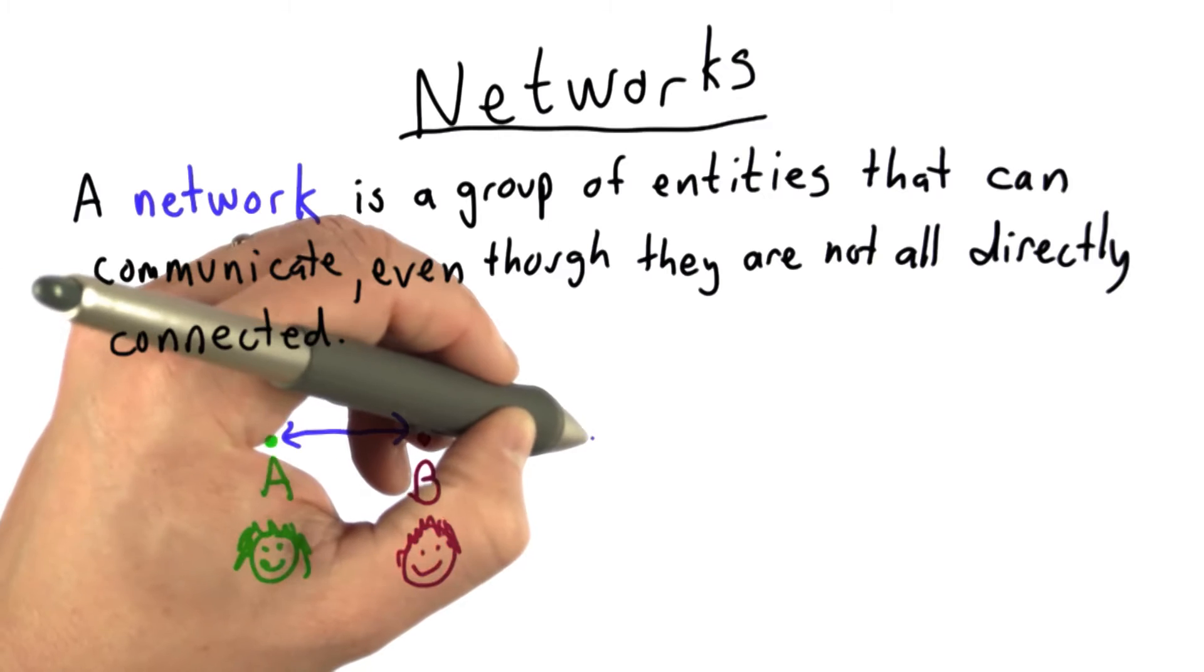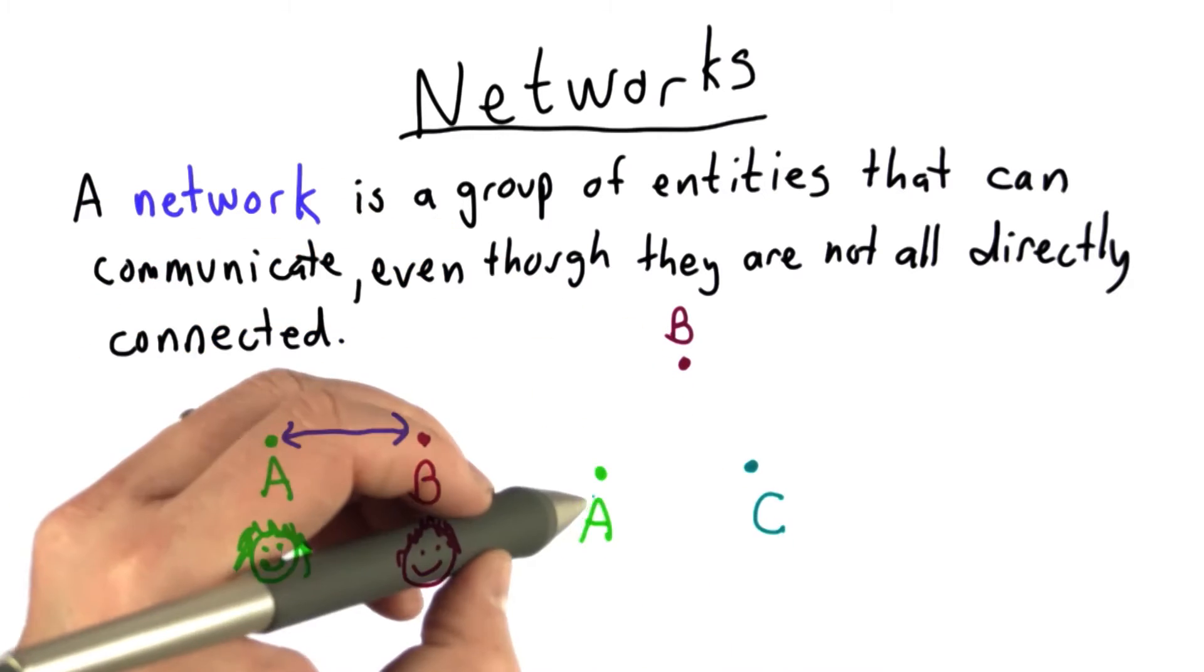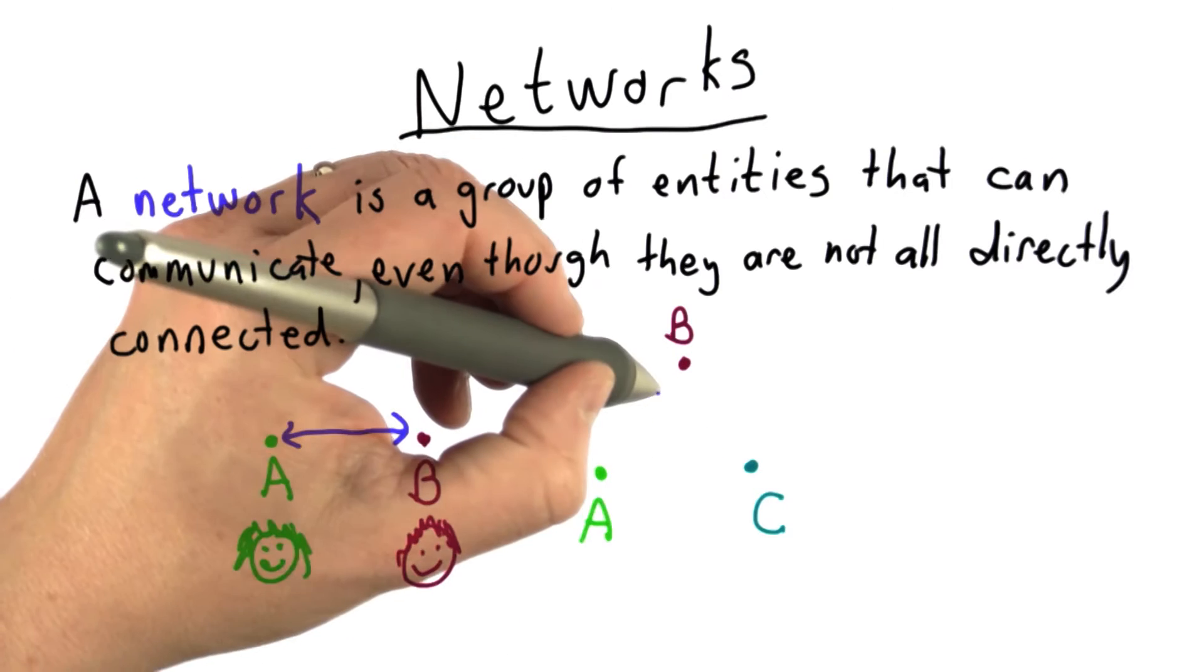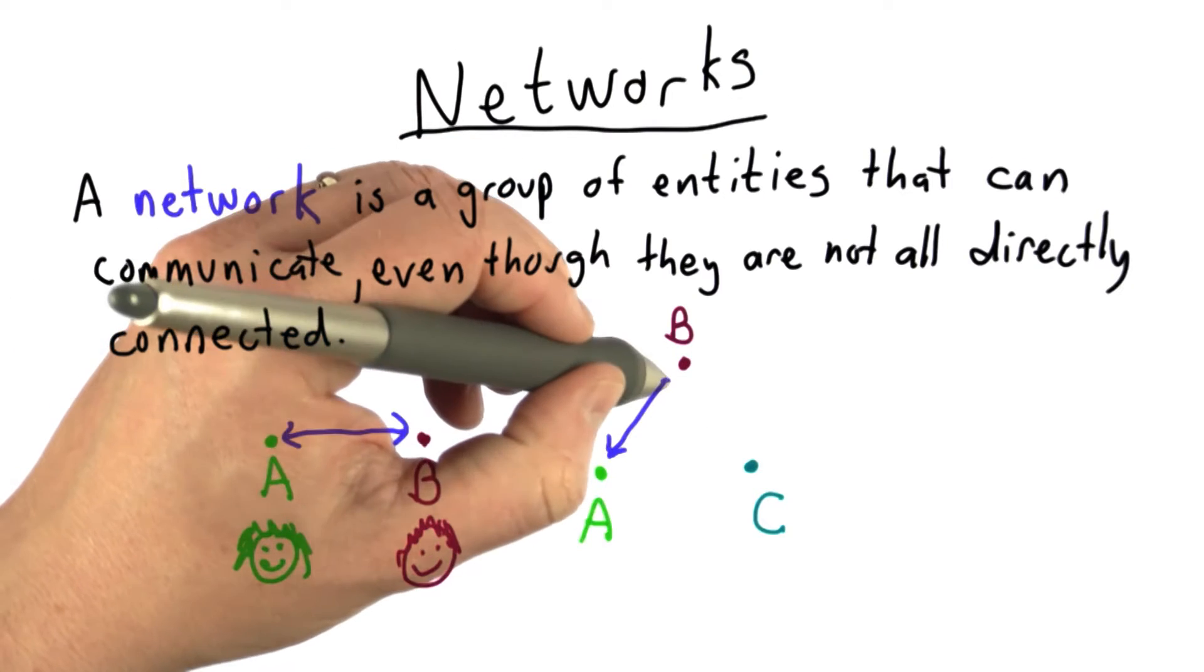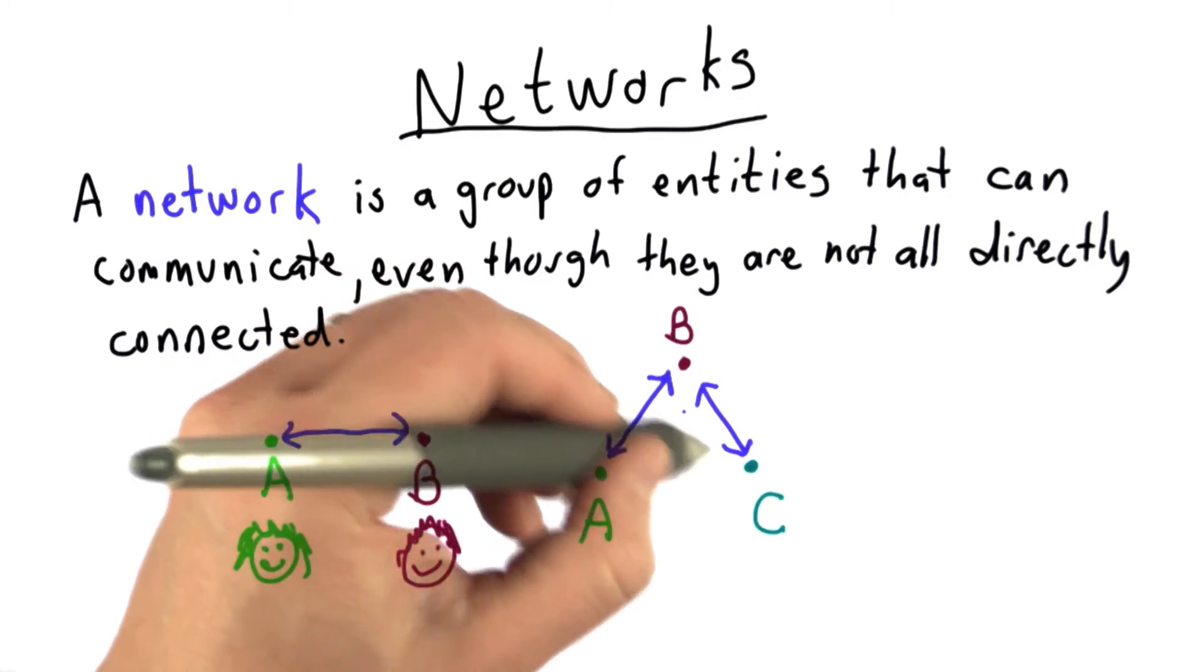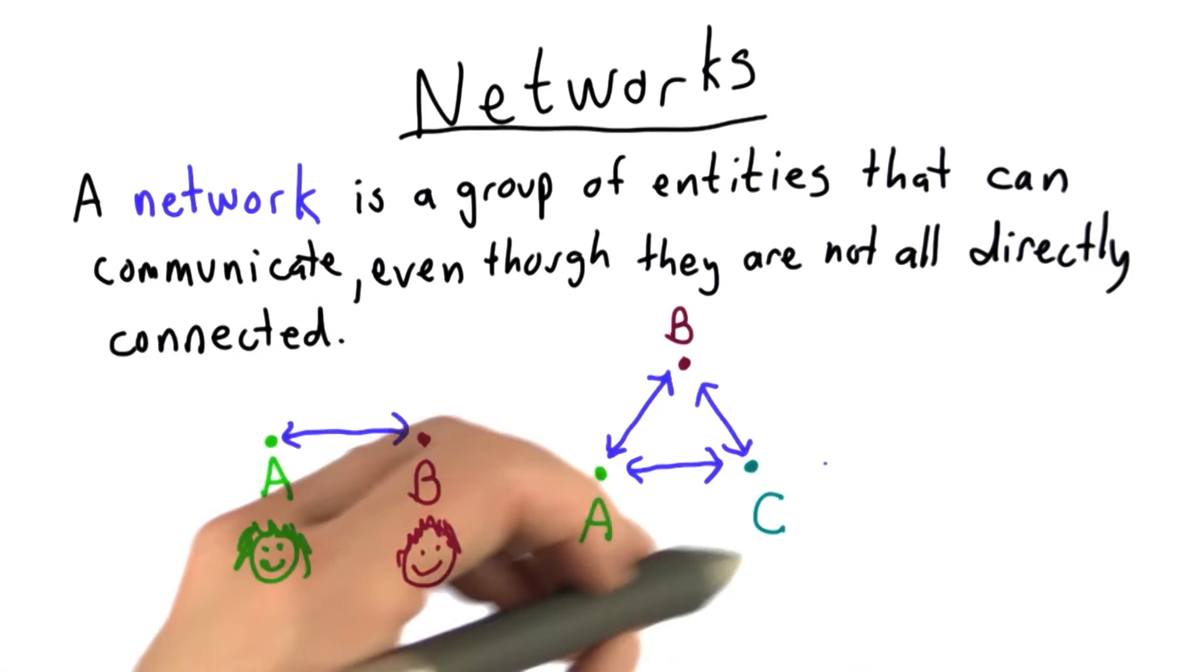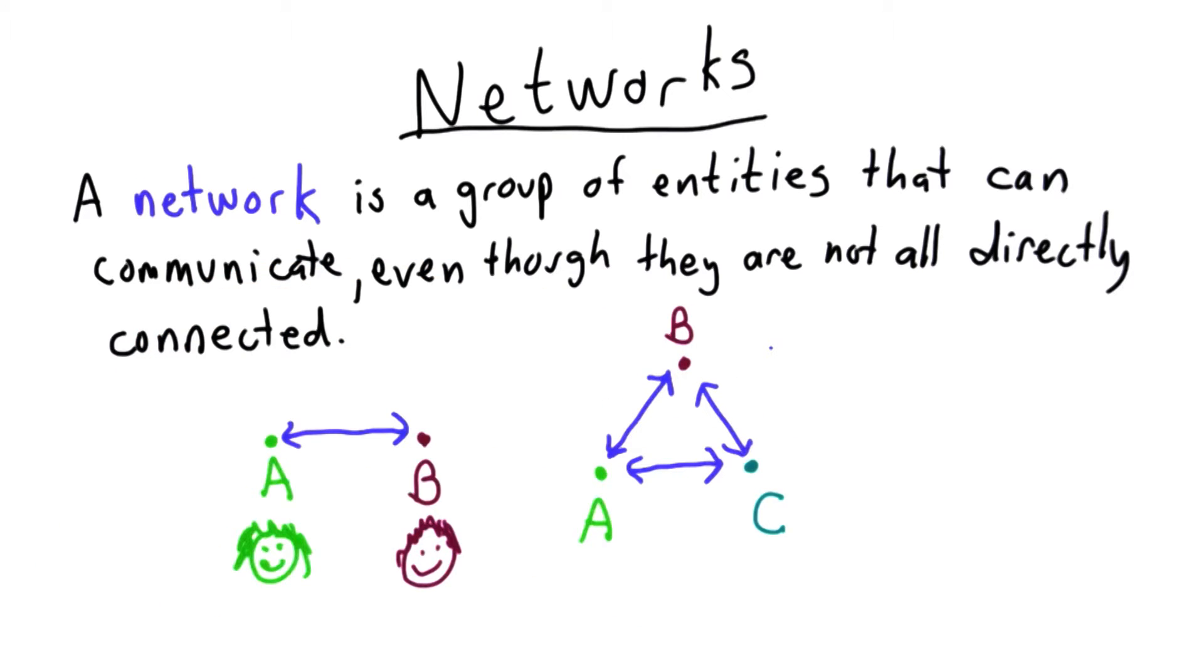If we had the second scenario, we'll say we have Alice, Bob, and Charlie, and Alice can communicate with Bob. Bob can communicate with Charlie, and Charlie can communicate with Alice. But they can do all this directly. They're all directly connected.